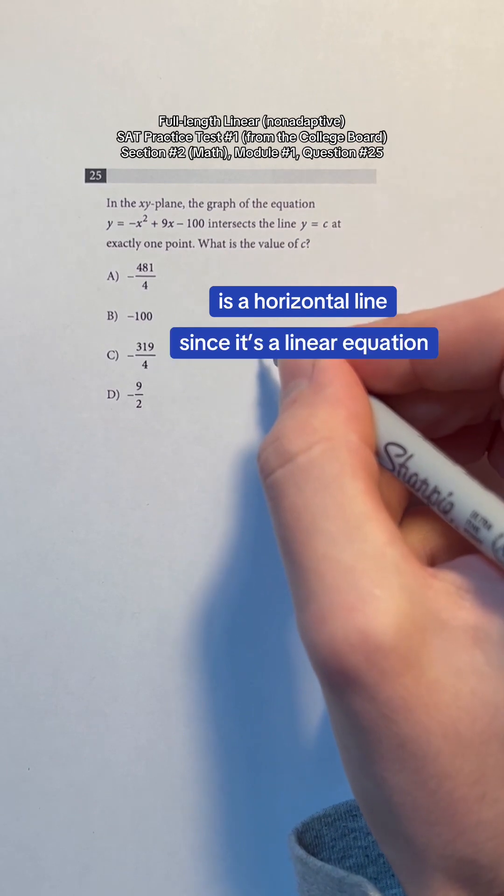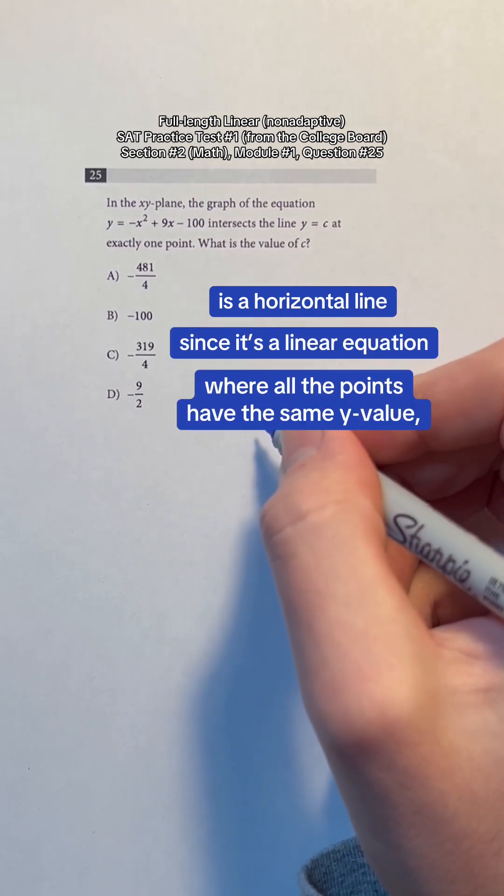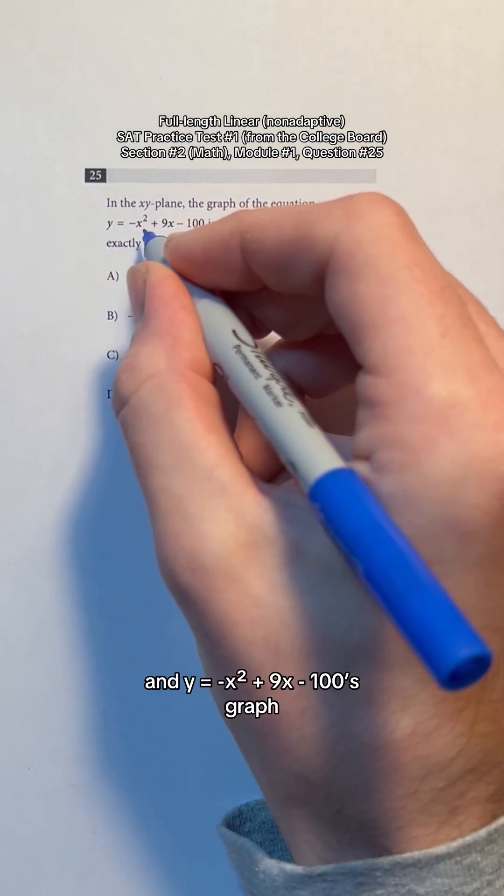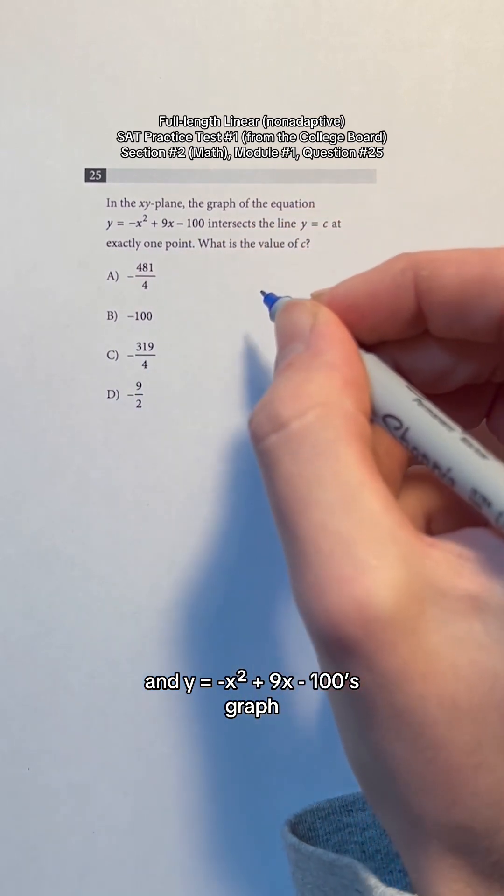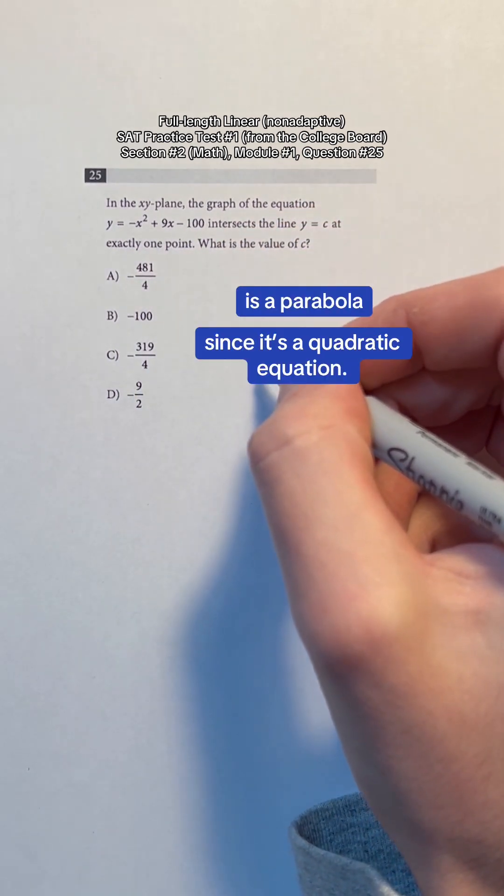y equals c's graph is a horizontal line since it's a linear equation where all the points have the same y value. And y equals negative x squared plus 9x minus 100's graph is a parabola since it's a quadratic equation.